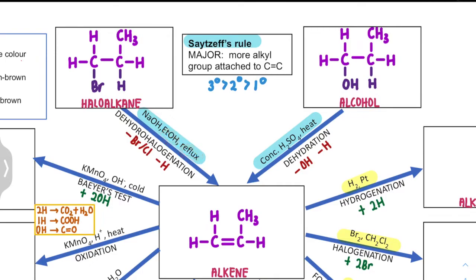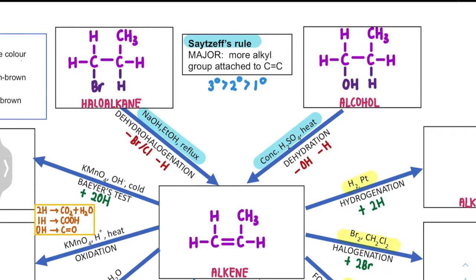So here we're going to remove our bromine, and next we're going to remove the hydrogen — not from the same carbon, but from the carbon next to it. For this example, the carbon containing OH and the carbon containing Br have only one neighboring carbon, so there is no major or minor product. That is actually for the preparation of Alkene.